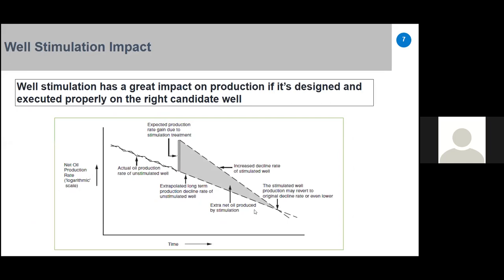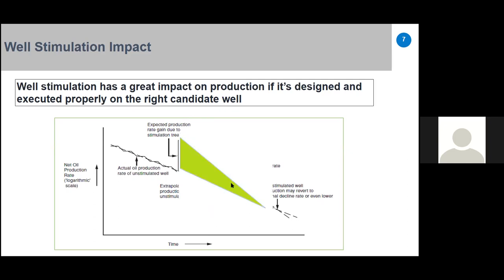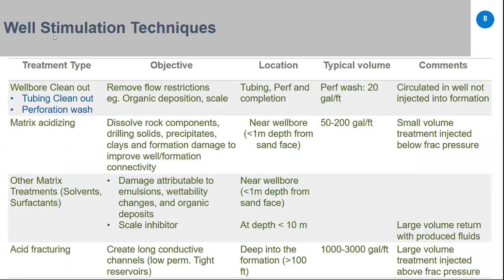Well stimulation has a great impact on production if designed and executed properly on the right candidate well. When a well is put into production, the production rate declines exponentially, hyperbolically, or harmonically. After performing a stimulation job, you add extra production, and what you gain is the added reserve represented by the area under the production curve.